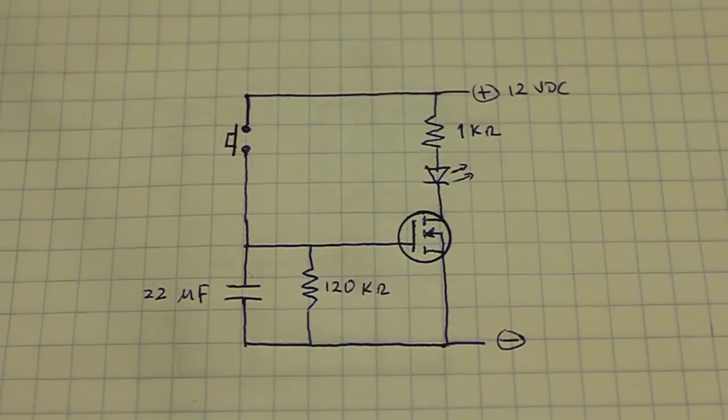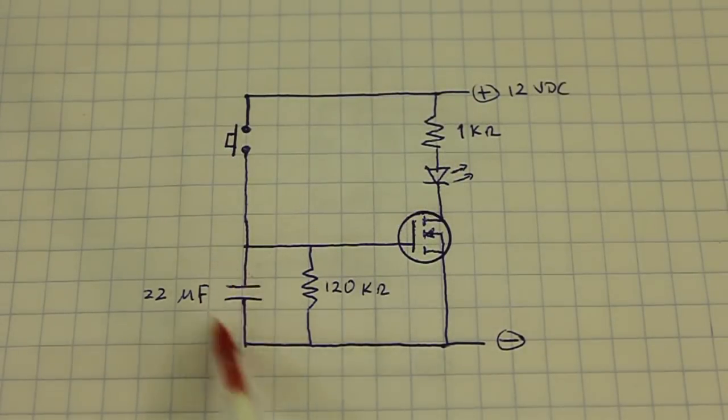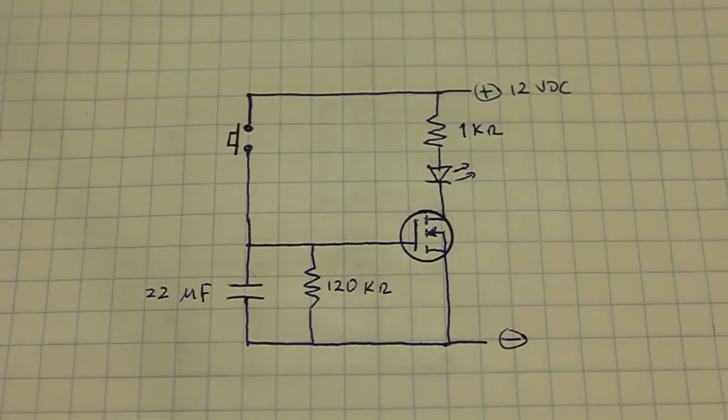The on time is controlled by both the capacitor and the resistor. A larger capacitance and or resistance results in a larger on time and vice versa.